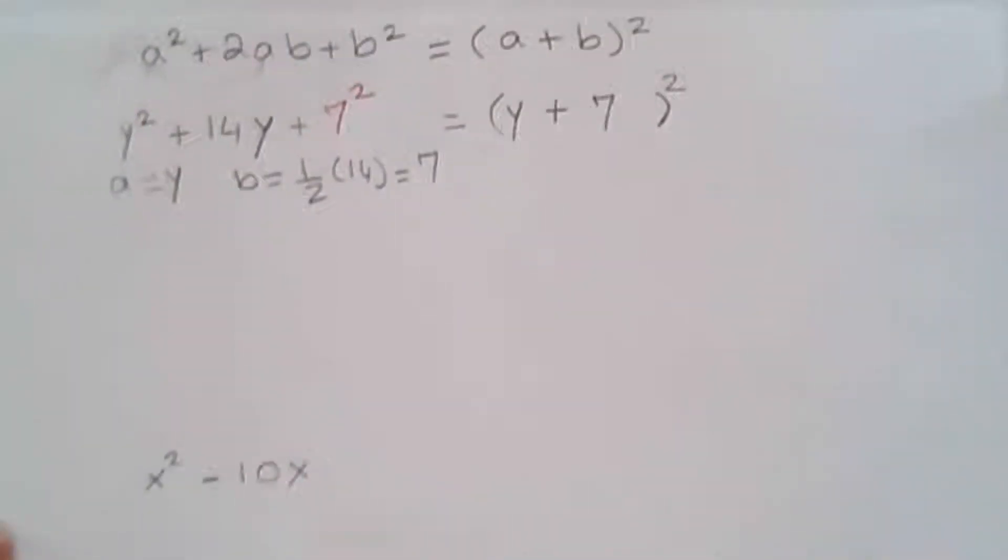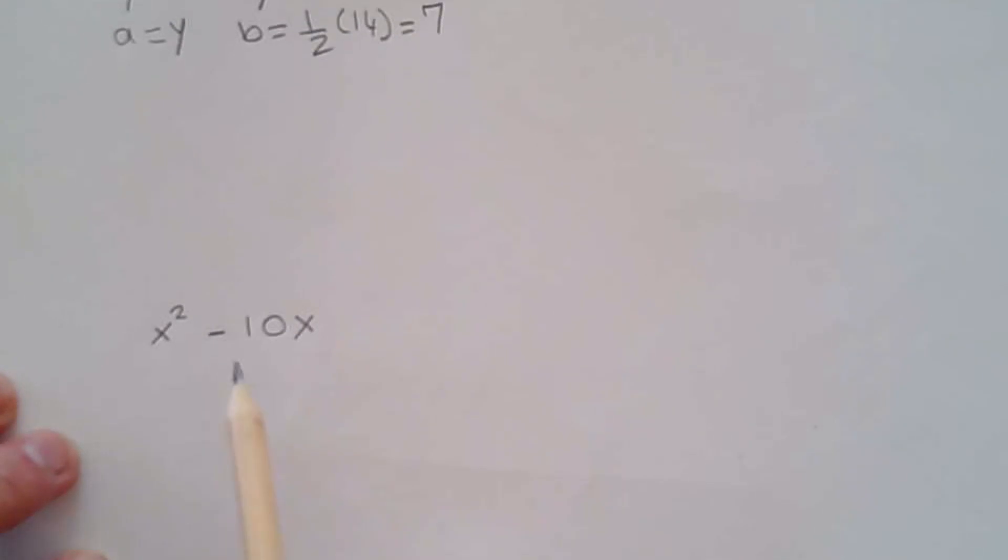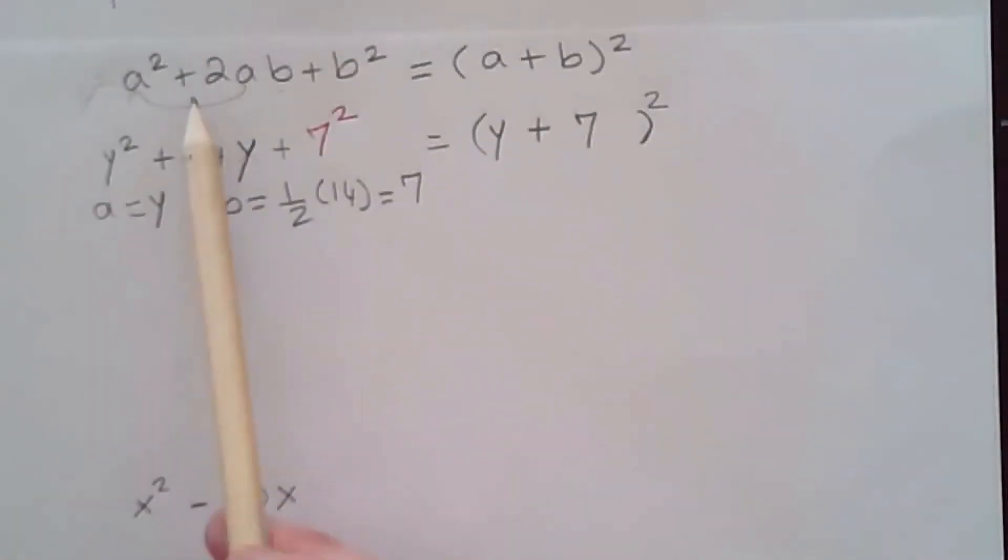I wanted to give you another example with the middle term being negative. It would be exactly the same but with, well, except the sign of the middle term. So you have a² - 2ab + b² equal to a—the sign of the middle term is negative—so this would be minus b².